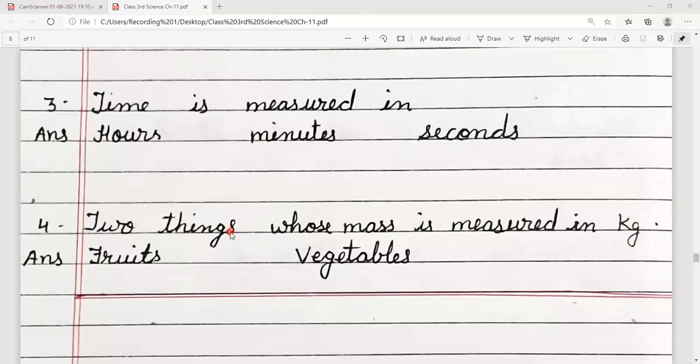Next is number 3, time is measured in hours, minutes and seconds. Number 4, two things whose mass is measured in kilogram. Kilogram mein hum measure karte hain fruits and vegetables.